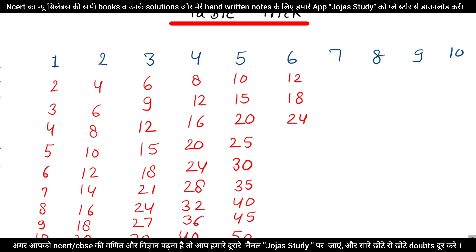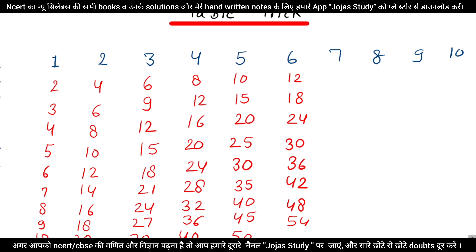Okay, what will be our 30? Then we will have 31, 32, 33, 34, 35, 36, 37, 38, 39, 40, 41, 42, 43, 44, 45, 46, 47, 48. What will be our 48? 49, 50, 51, 52, 53, 54, 55, 56, 58, 59, 60. So we will have our 60.